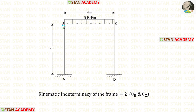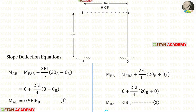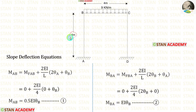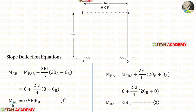One equation can be made at joint B and another at joint C. Now let us make the slope deflection equations, starting with column AB. In the equations, let us apply the fixed end moments, which are 0. The length of column AB is 4. At point A there is a fixed support, so there will be no slope — theta A equals 0. Finally, in column AB we have made two equations.